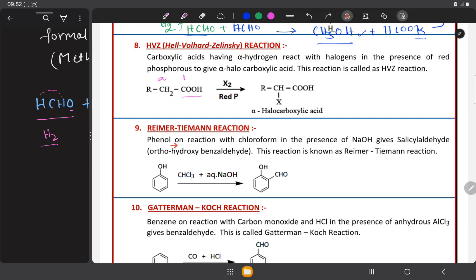Phenol on reaction with chloroform. Phenol, this is Phenol C6H5OH, then OH is substituted on benzene ring. It is called Phenol and reacts with chloroform in the presence of sodium hydroxide. Chloroform CHCl3 is the formula of chloroform reacts with phenol in presence of aqueous NaOH to give salicylaldehyde.